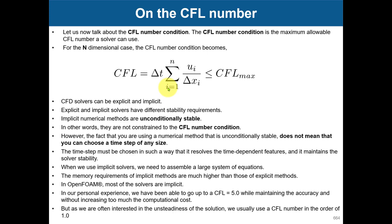In CFD, we have explicit and implicit solvers. Almost all solvers in OpenFOAM are implicit solvers — there is one explicit solver in OpenFOAM that you are likely not going to use. Implicit solvers are unconditionally stable, meaning you don't have any restriction in the CFL number. However, that doesn't mean you can use super large CFL numbers — if you do, you are going to lose accuracy because large CFL numbers indicate large time steps and you lose a lot of information.